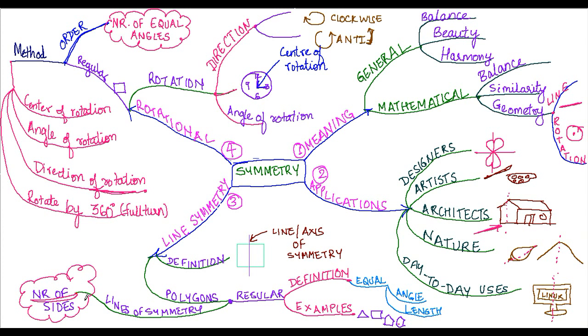That was all about line symmetry. Then we discussed rotational symmetry and in that we first understood rotation. There are three aspects of rotation that we understood. First is the center of rotation. We use the example of a clock. The center of rotation is the fixed point along which an object rotates.